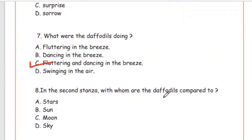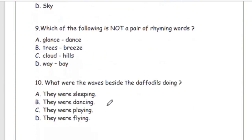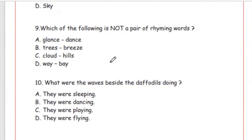Question 8: In the second stanza, with whom are the daffodils compared? Option A, stars. Question 9: Which of the following is NOT a pair of rhyming words? Options: glance–dance, trees–breeze, cloud–hills, wave. The pair that does not rhyme is Option C, cloud–hills.